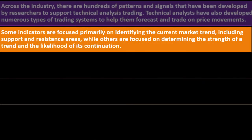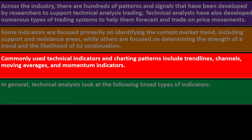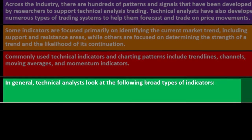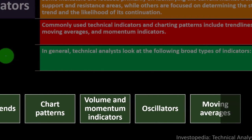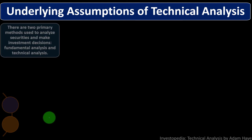Some indicators are focused primarily on identifying the current market trend, including support and resistance areas, while others focus on determining the strength of a trend and the likelihood of its continuation. Commonly used technical indicators and charting patterns include trend lines, channels, moving averages, and momentum indicators. In general, technical analysts look at price trends, chart patterns, volume and momentum indicators, oscillators, moving averages, and support and resistance levels.